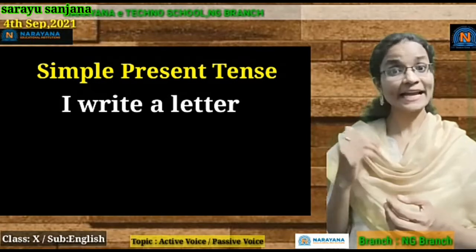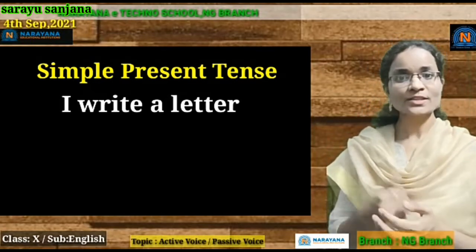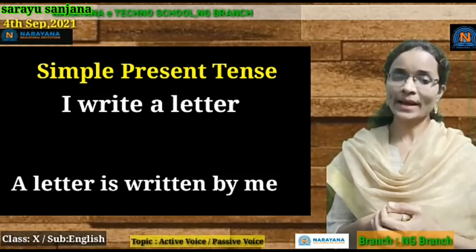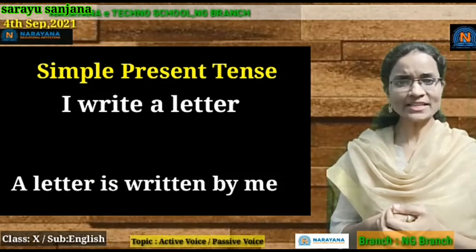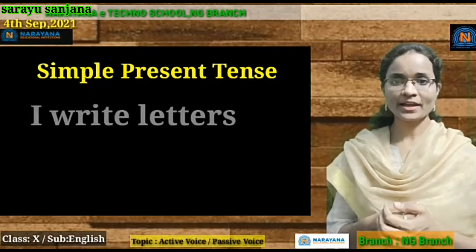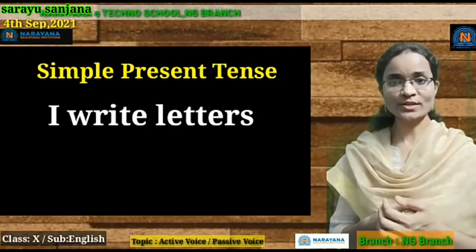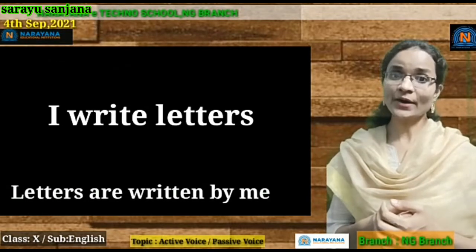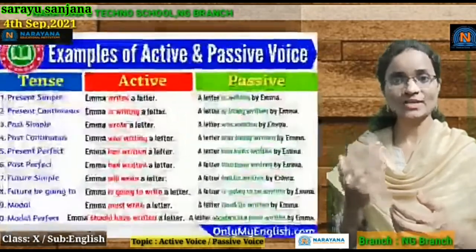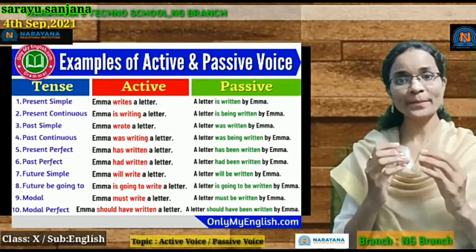Let us look at some examples. 'I write a letter' is in simple present tense. In passive voice, it turns into 'A letter is written by me'. Using plural form: 'I write letters' becomes 'Letters are written by me'. If the sentence belongs to present continuous tense — with the -ing form — in passive voice we are going to add 'being'.